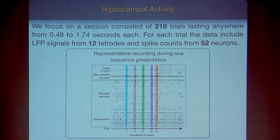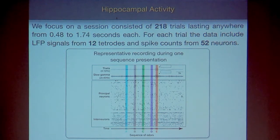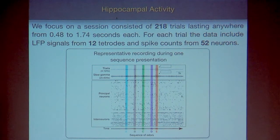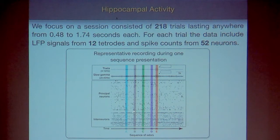We focus on 218 trials. Each trial involves presenting one odor, lasting somewhere between 0.48 to 1.74 seconds. There are 12 tetrodes giving 12 LFP signals and 52 neurons. As mentioned, there is a structure: each LFP is related to multiple of these neurons. The data includes both discrete and continuous time series along with labels.